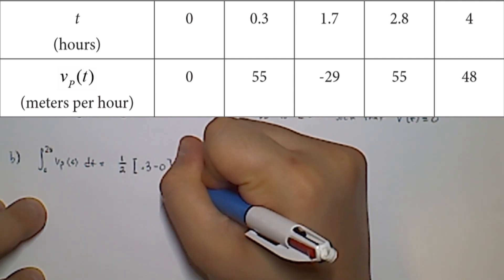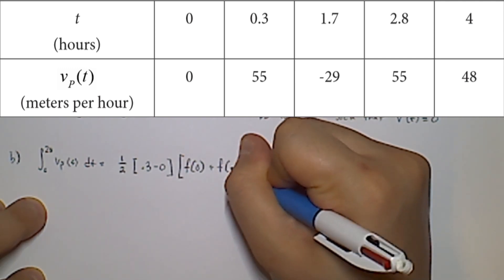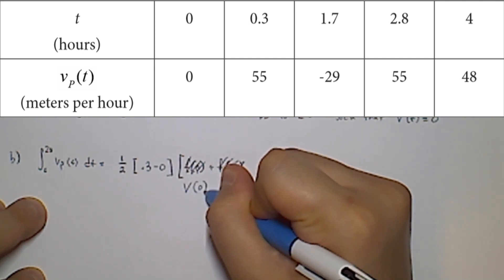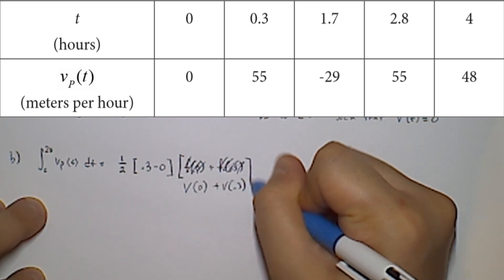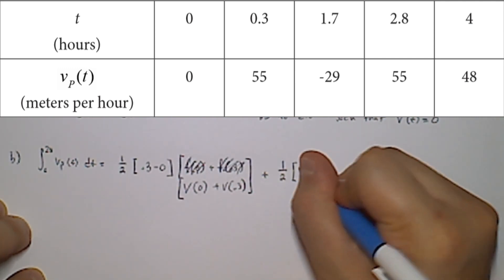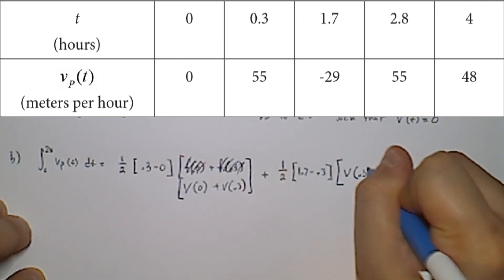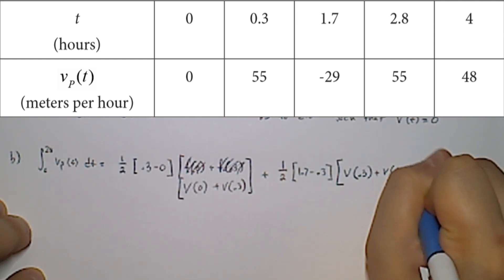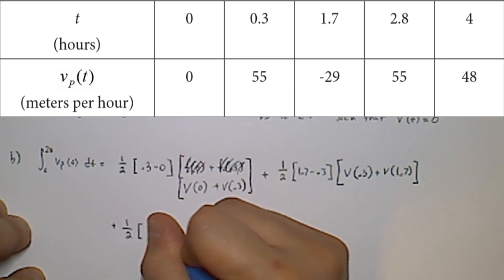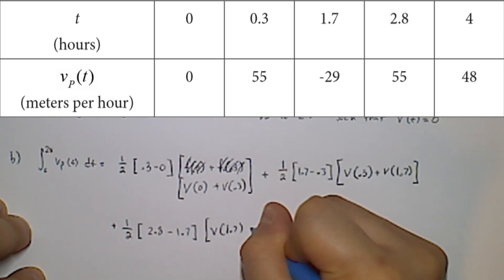The first trapezoid: one half times (0.3 minus 0) times (v(0) plus v(0.3)). The second trapezoid: one half times (1.7 minus 0.3) times (v(0.3) plus v(1.7)). The third trapezoid: one half times (2.8 minus 1.7) times (v(1.7) plus v(2.8)).